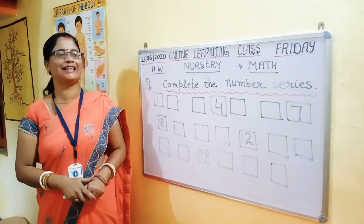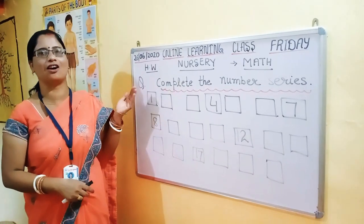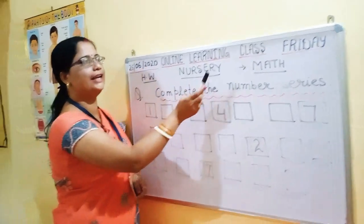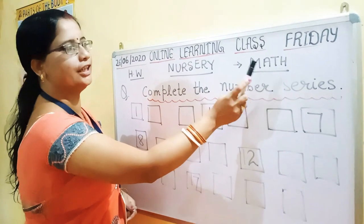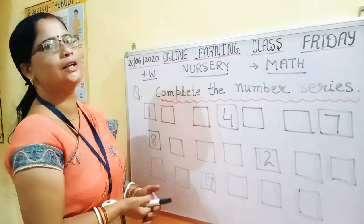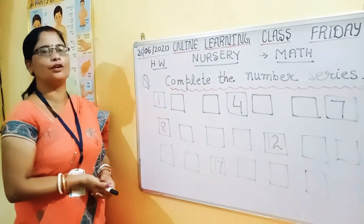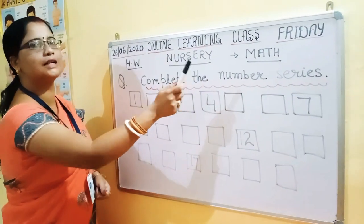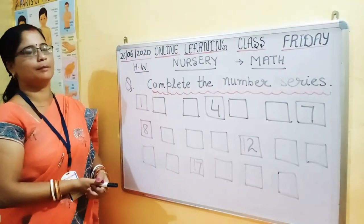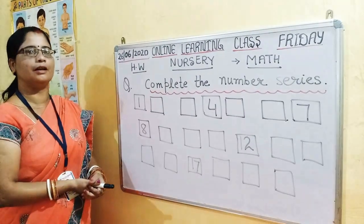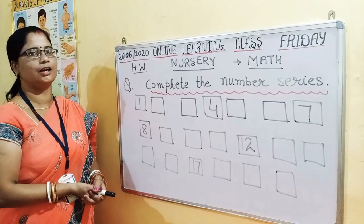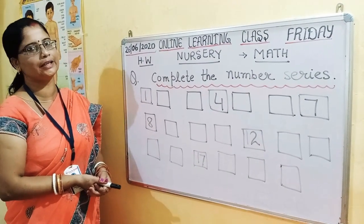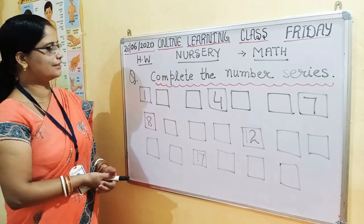Hi kids, good morning kids. This is the online class. Our nursery subject is math. Today we will complete the numbers. We will do numbers 1 to 20. Let's start.